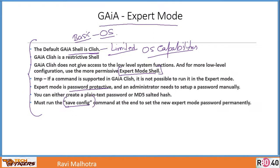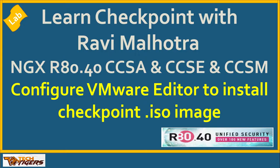Expert mode: the default login puts you into Clish mode, which is less permissive. When you need low-level operations for the Security Management Server or Security Gateway, you push into expert mode - a password-protected mode. Once in expert mode you can perform low-level functions. When done, run 'save config' and type 'exit' to return to Clish.